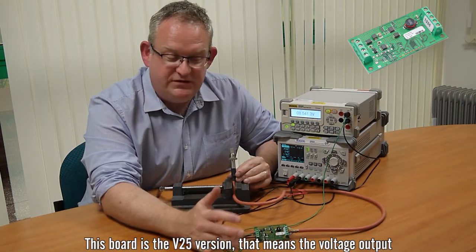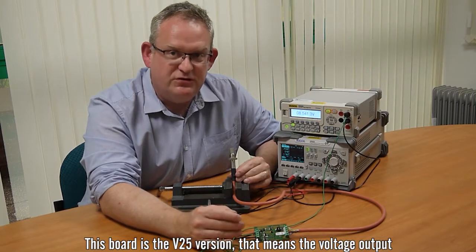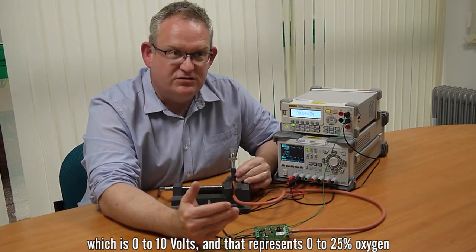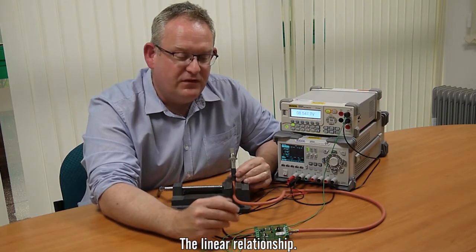This board is a V25 version, that means a voltage output which is 0 to 10 volts and that represents 0 to 25 percent oxygen, the linear relationship.